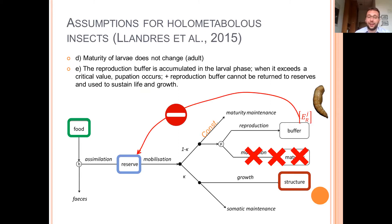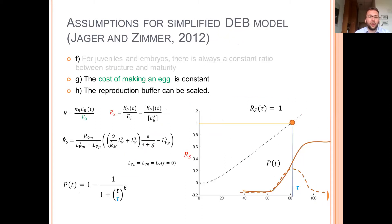And the reproduction buffer cannot be returned to reserves and used to sustain life and growth. The reproduction buffer would be used in further life stages of Tenebrio molitor. We decided to use also some concepts and assumptions from the simplified DEB model.